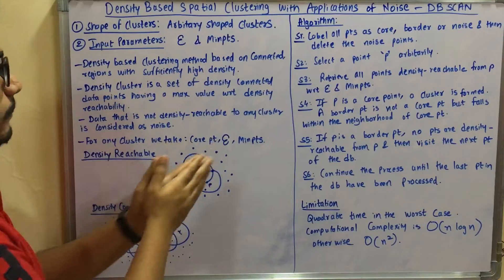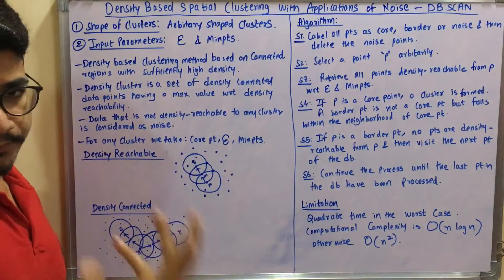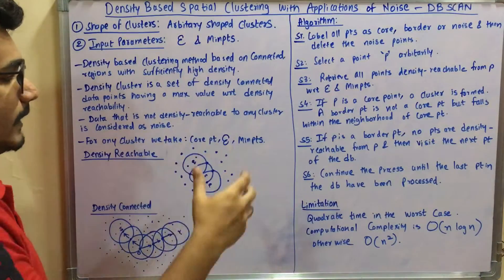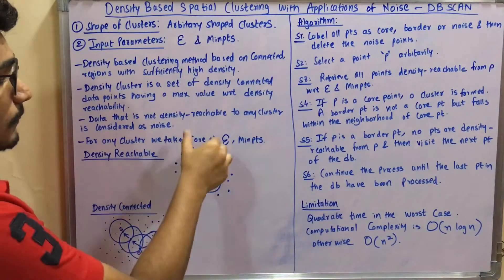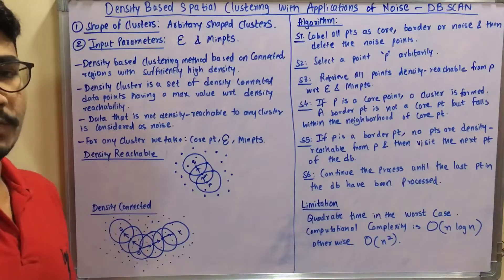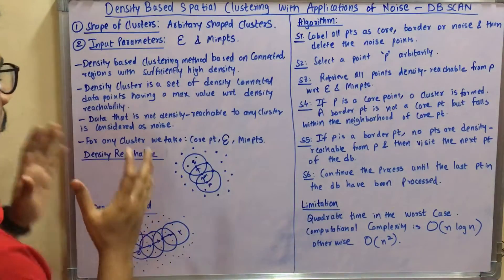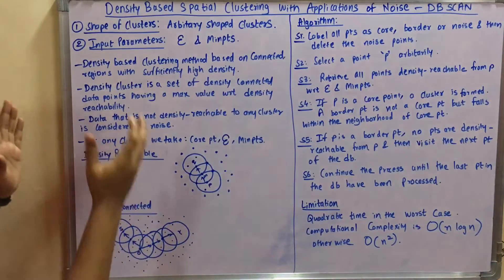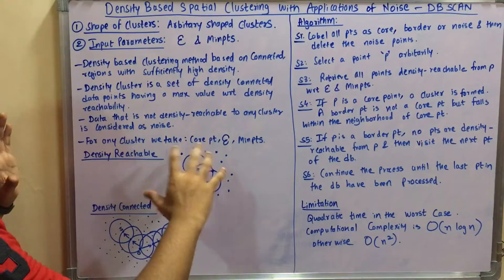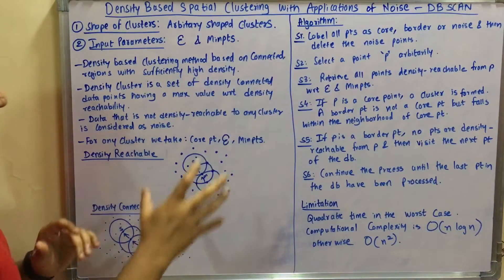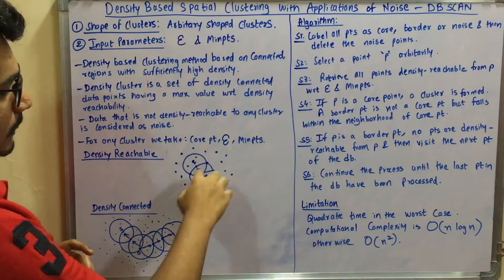To apply DBSCAN, you need three foundational elements: the core point, which is any arbitrary point taken from the dataset; epsilon, which is the maximum distance from the core point; and the minimum points, which form the initial ordering set. With these, we can explore the two concepts of density reachability and density connected.